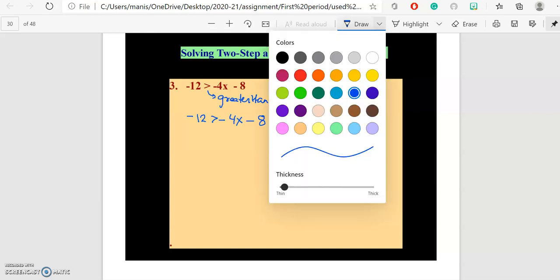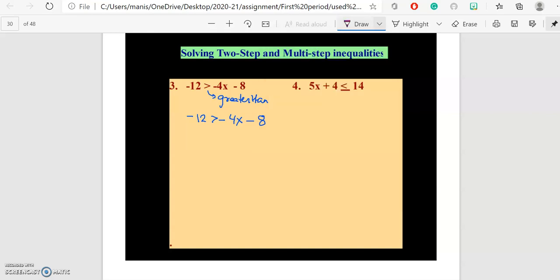Step number one: I will try to get rid of this negative 8, or minus 8. So I will add 8 to both sides. This will be cancelled out and this will be negative 4 is greater than negative 4x.